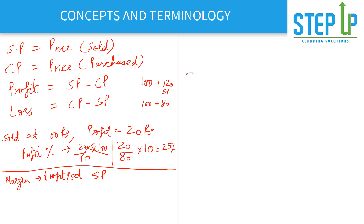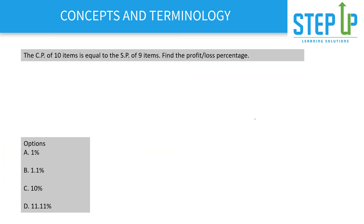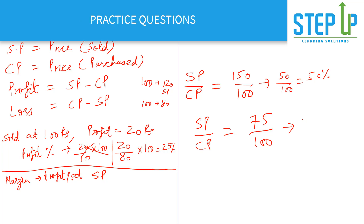When attempting questions, we will extensively use the ratio SP upon CP. For example, if SP is 150 and CP is 100, SP/CP = 150/100, so profit is 50/100 = 50%. If SP/CP = 75/100, then SP is lower than CP, meaning a loss of 25%. This ratio is very important throughout this chapter.